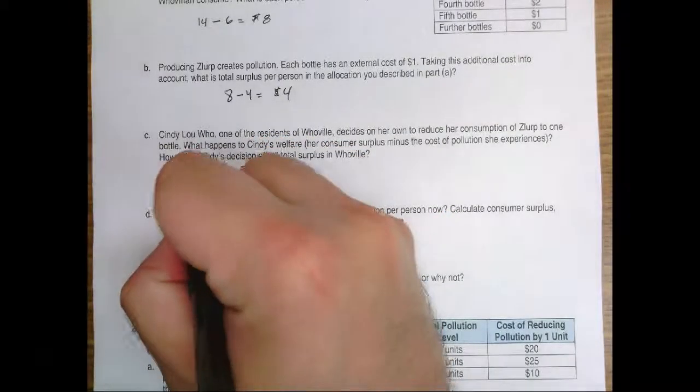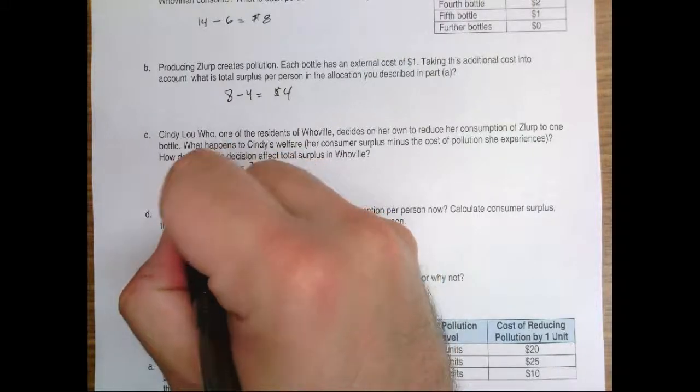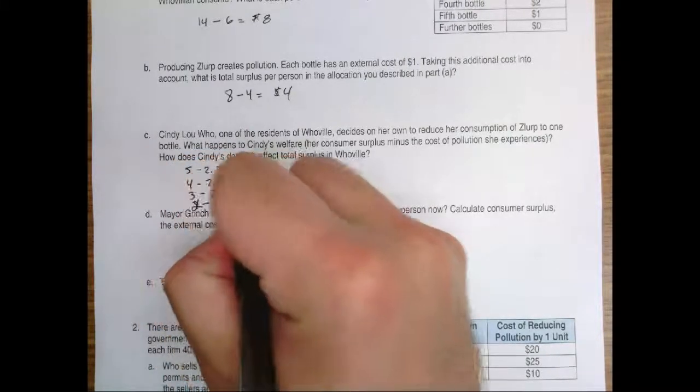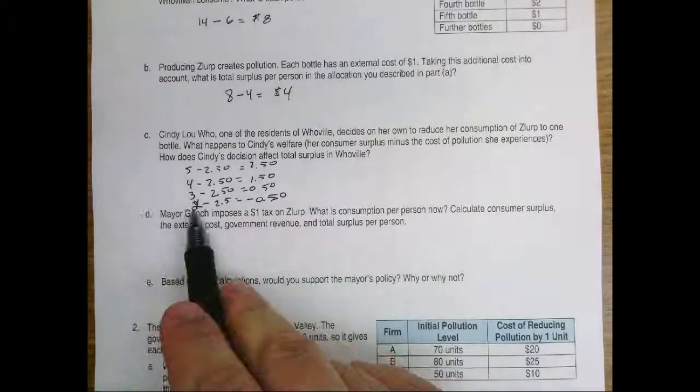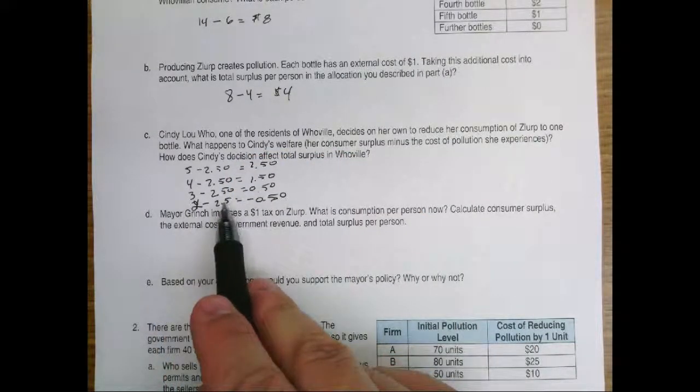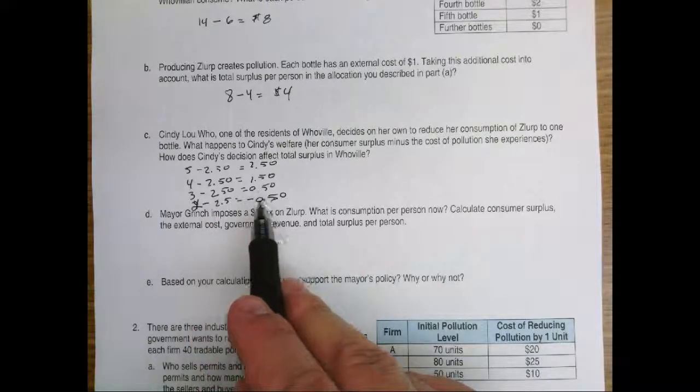In the fourth bottle, what we find is that she's actually losing $0.50 because we're willing to pay two for the fourth bottle. There's really $2.50 in cost, so we're losing $0.50 in value.